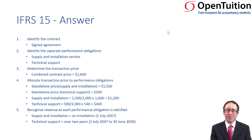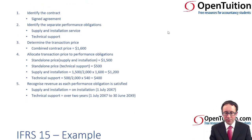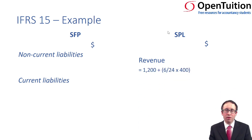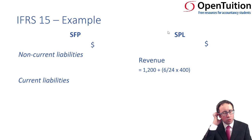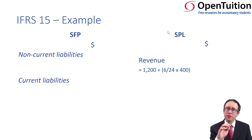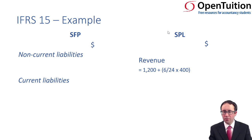Our issue is that the reporting date is December X7. In the profit or loss, we have revenue; in the statement of financial position, there will be some deferred income balances. For revenue: goods are $1,200. For services, the total allocated is $400, but only 6 out of 24 months — a quarter — are recognised this year. A quarter of $400 is $100. So total revenue is $1,300.